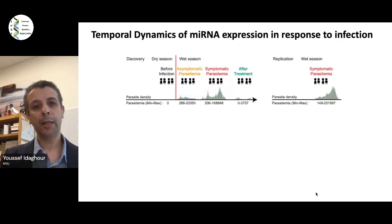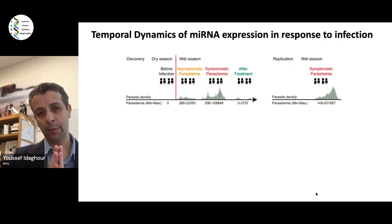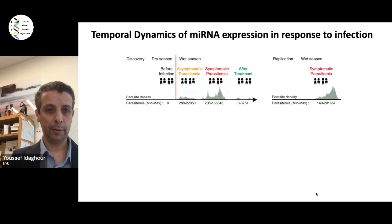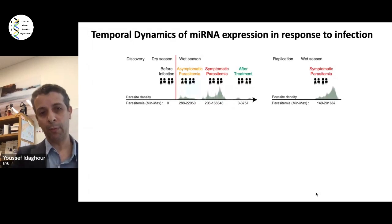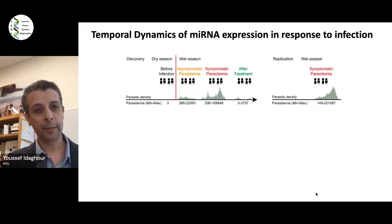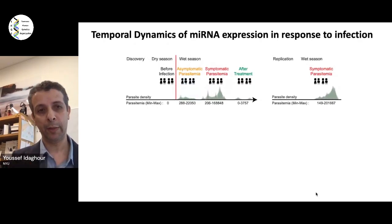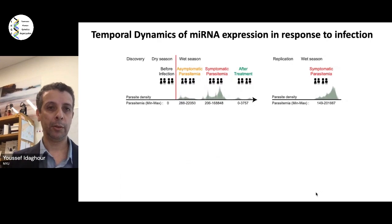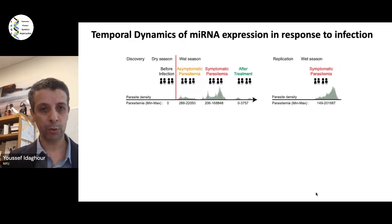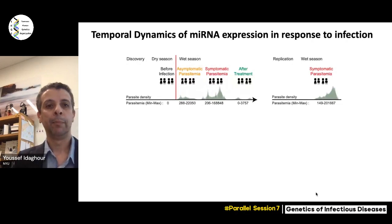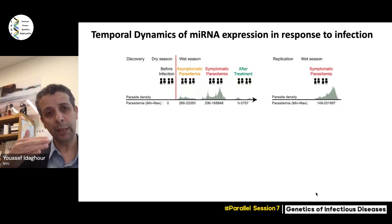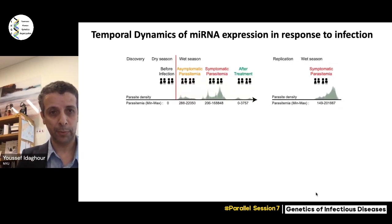The idea was simple: we want to focus on a group of children before infection. Because malaria is seasonal in Burkina Faso, we have an opportunity to sample children before infection and follow them over time with weekly and sometimes bi-weekly visits. We've been able to sample about 20 children during the asymptomatic parasitemia stage — meaning they don't show symptoms but the parasite has been detected in their blood — and then keep following them until they have symptoms.